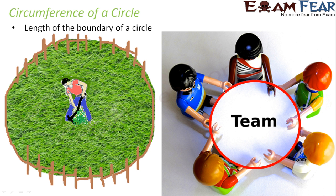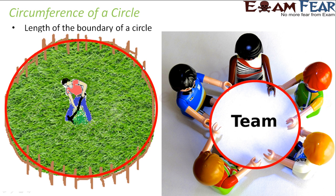Let's take another example where circumference is useful. Say a farmer has his share of land in a circular shape and he decides to put a boundary on his field. He needs some material — maybe wires or wooden pillars. How much wire does he need? He will know that only when he knows the total length of the boundary of the circle, which is nothing but the circumference of the circle.